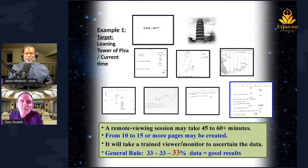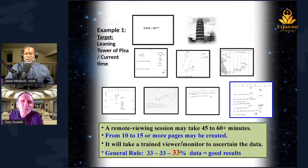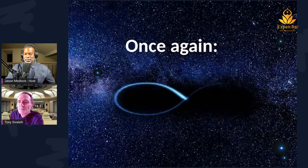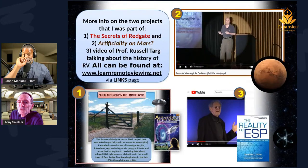Jason's been one of the best students I've ever had — he's picked this up quickly and has had great success in some deep sessions. The general rule of thumb is about 33% you can guess and probably get right, 33% you may just be wrong, and it's that other 33% that separates a good session from a so-so or not-so-good session.